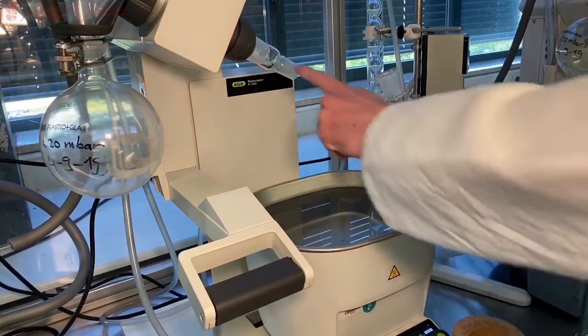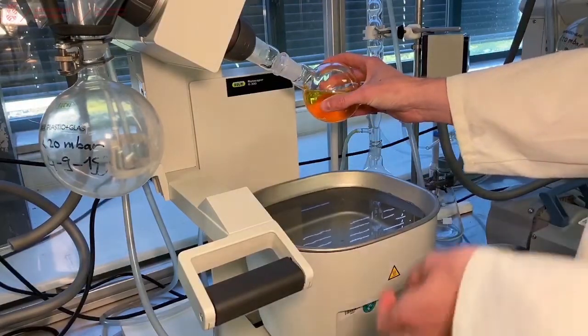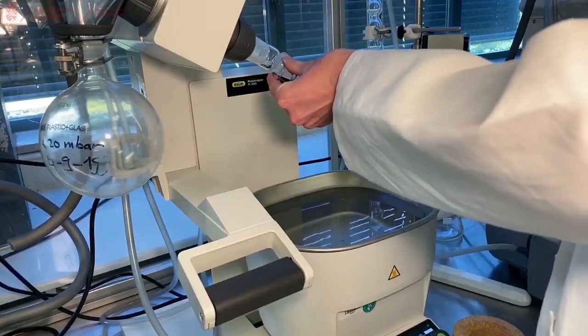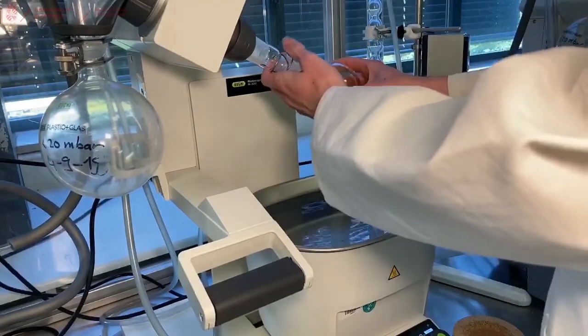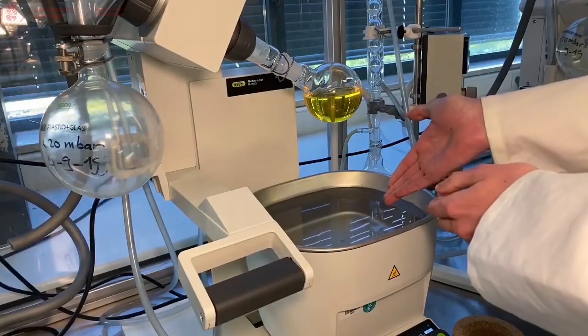If you have a smaller flask, you need to place another attachment here. Place it on the attachment and make sure to always place a clamp. This clamp will save you from collecting your product from the water bath.